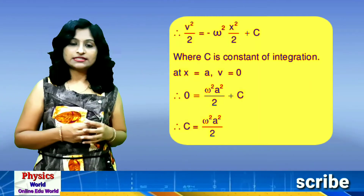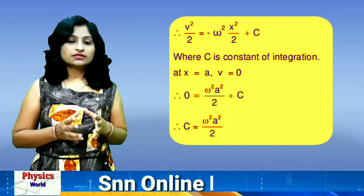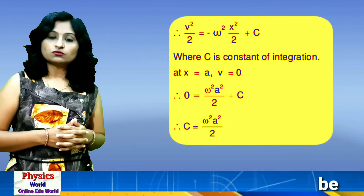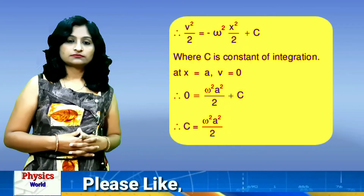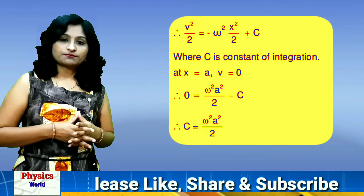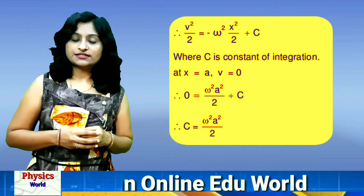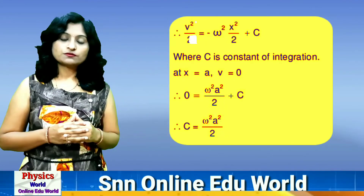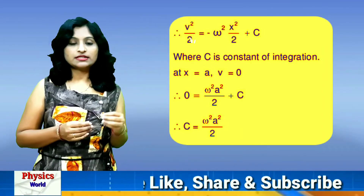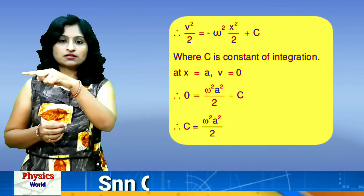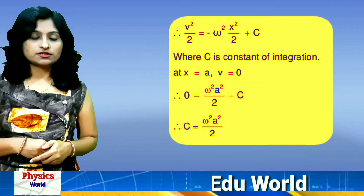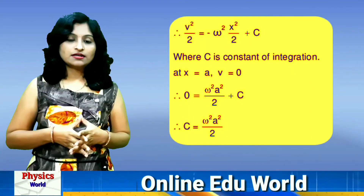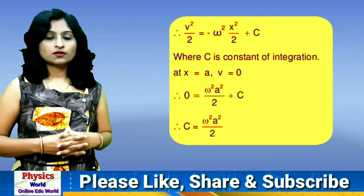We keep this constant as C on the right-hand side: v²/2 = -ω²x²/2 + C. Now let us calculate the value of C. We will use one particular condition: when x is at the extreme, meaning x equals A (amplitude), at the extreme condition velocity becomes 0. We always observe that, as in the example of a swing — if you reach the maximum position, you return to mean position, meaning the velocity ends there. At extreme positions, velocity is always 0.